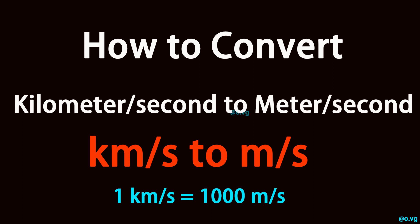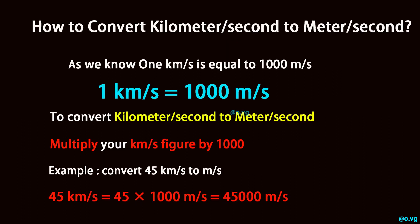How to convert kilometer per second to meter per second. As we know, 1 kilometer per second is equal to 1,000 meter per second. To convert kilometer per second to meter per second, multiply your kilometer per second figure by 1,000.